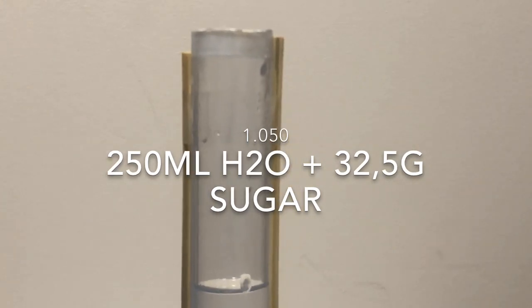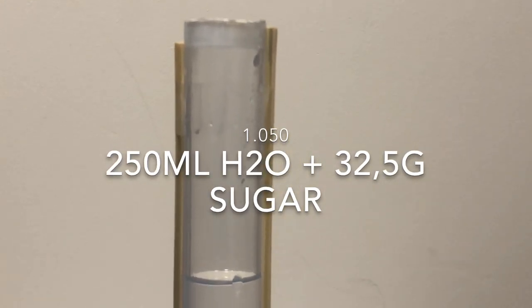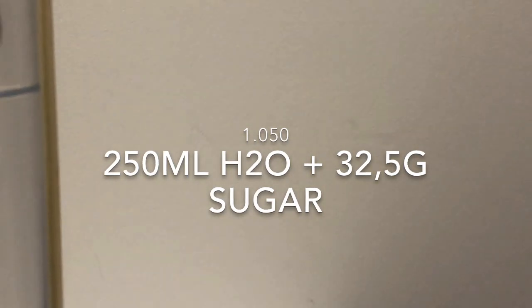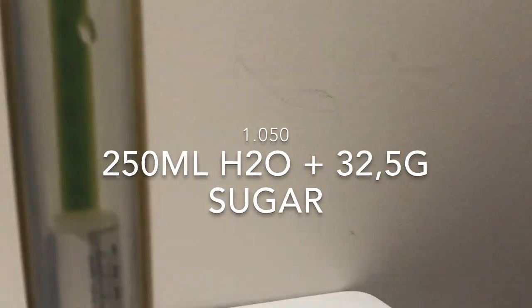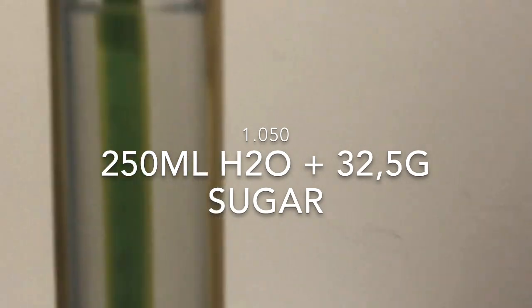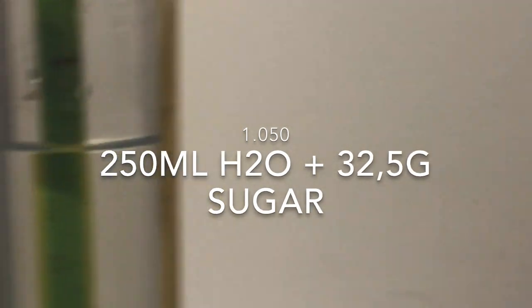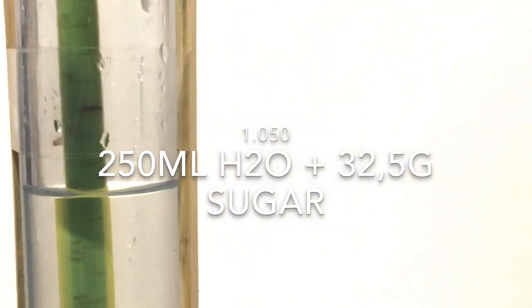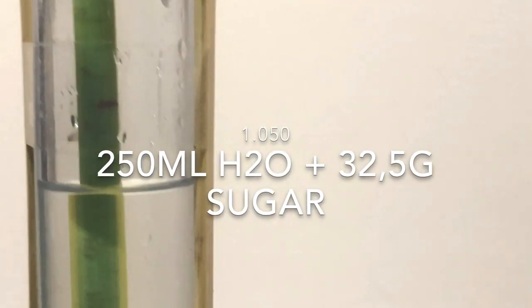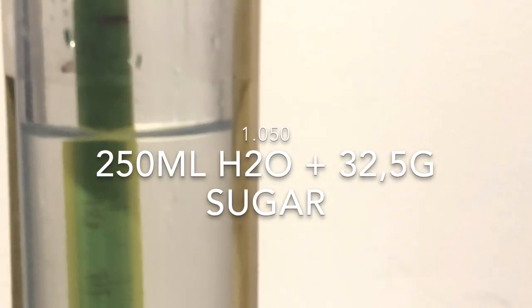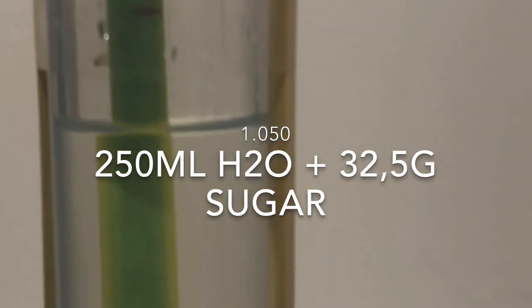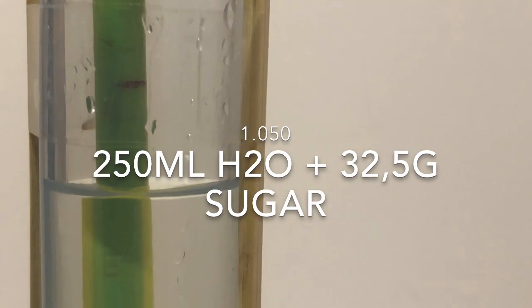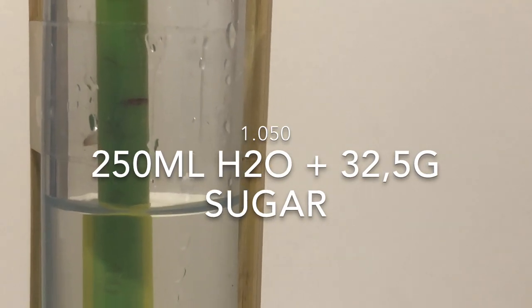Now mix 250 ml of water with 32 and a half grams of sugar and insert your hydrometer. This should give you an SG of 1.050. Although you won't be able to read that now, all we're doing is getting a reference of where 1.050 is. Make a note on the back of the printed paper, remove the hydrometer, and make a distinct line on the reference you noted.